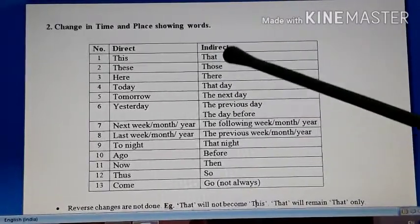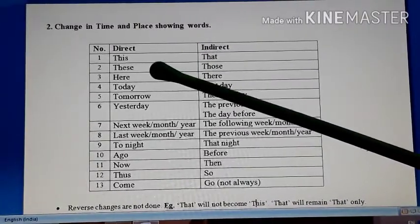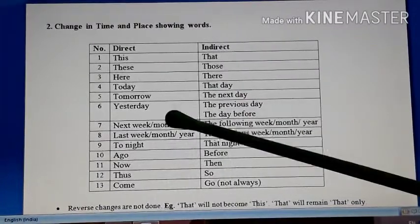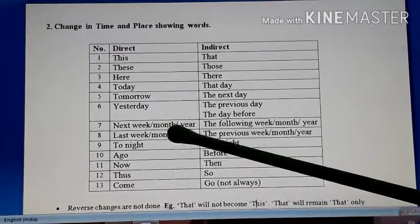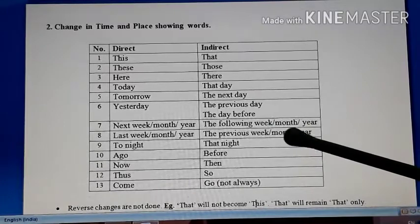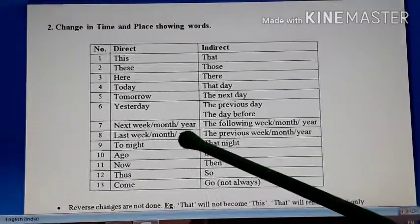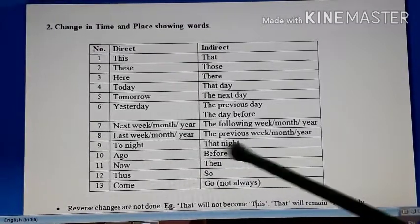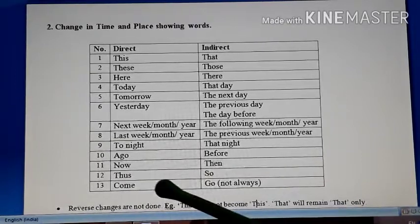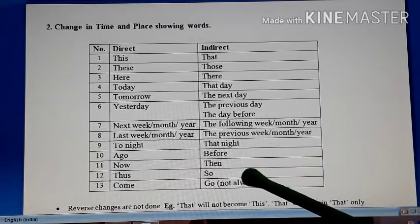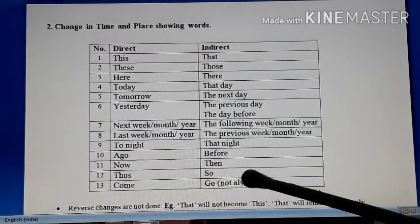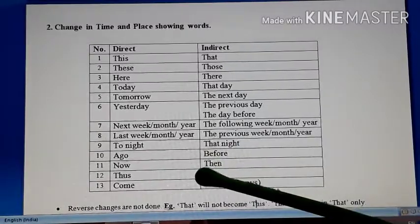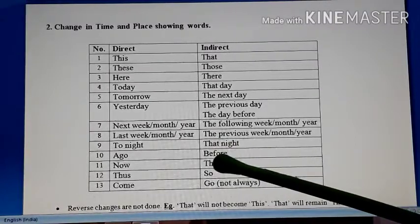In direct speech: this becomes that, these becomes those, here becomes there, today becomes that day, tomorrow becomes the next day, yesterday becomes the previous day or the day before. Next week/month/year becomes the following week/month/year. Last week/month/year becomes the previous week/month/year. Tonight becomes that night, ago becomes before, now becomes then, thus becomes so, and come becomes go — but not always. Also, reverse changes are not allowed: if that is given, it stays that; those will not become this.